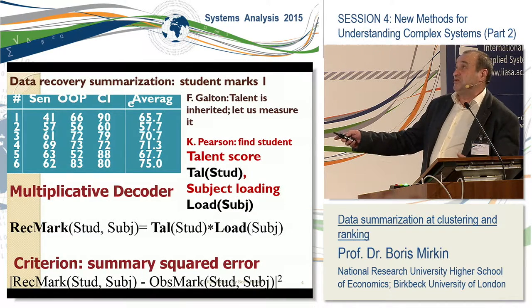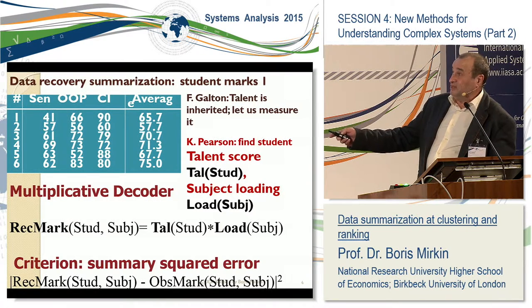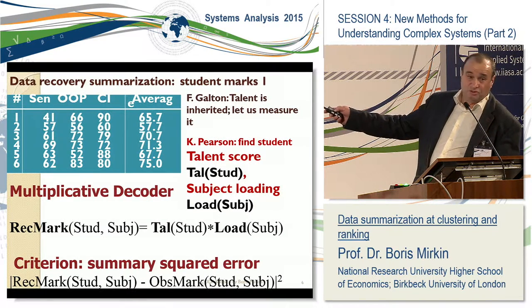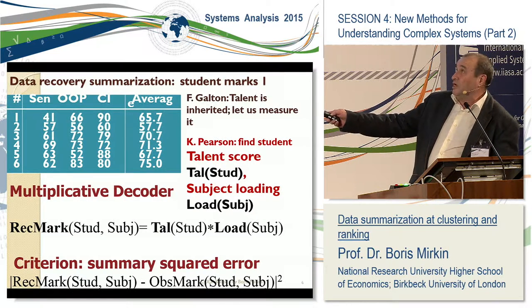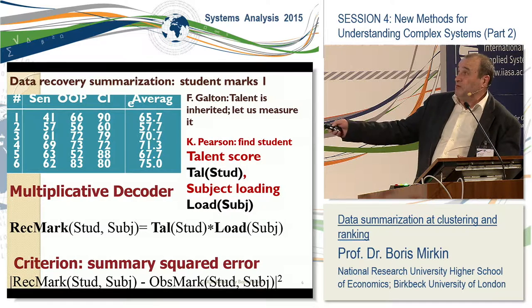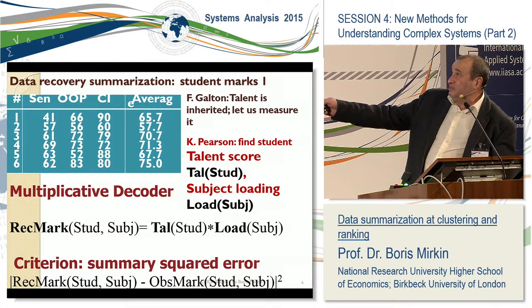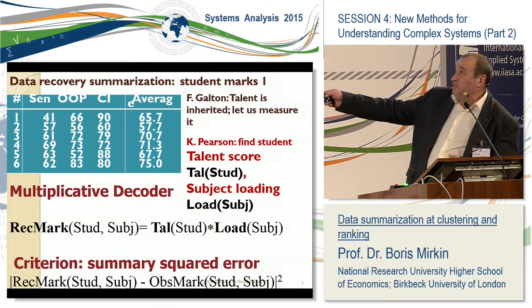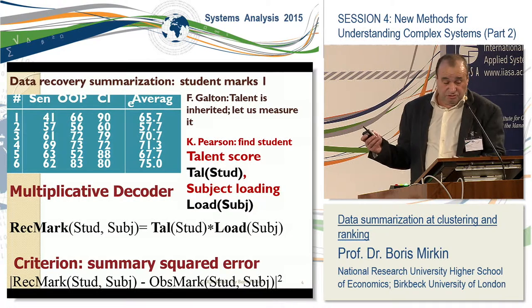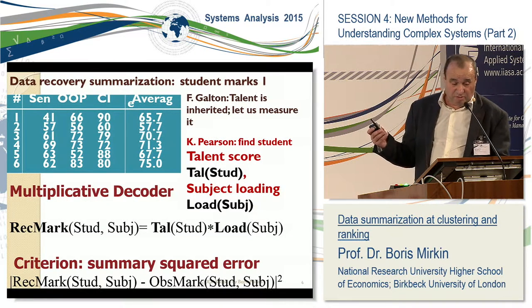This is quite a good equation, though you cannot satisfy it exactly because the marks form a matrix while the talent score and loading score are just vectors. So what you want, according to Pearson, is to find the vector of talent and a vector of loadings by minimizing the difference between the recovered data and the original data. This was his idea, and what I do is just extend this to many other problems.